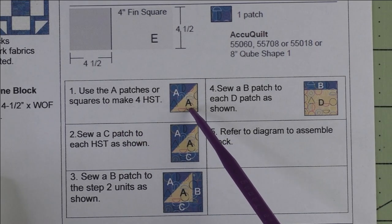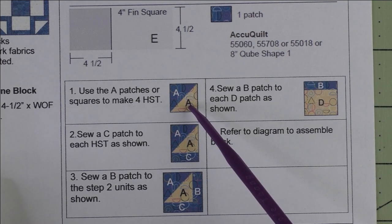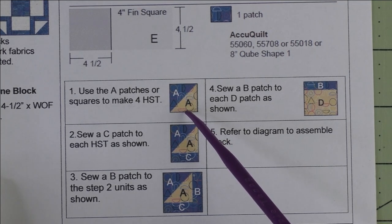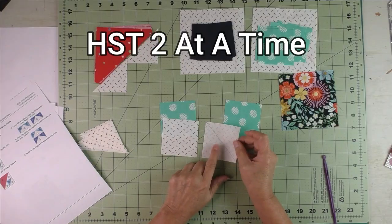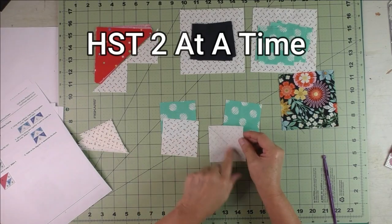We're going to use the two at a time method. If you're not familiar with this method, then stay tuned for a short tutorial. On the backside of the light fabric, we're going to draw a diagonal line.